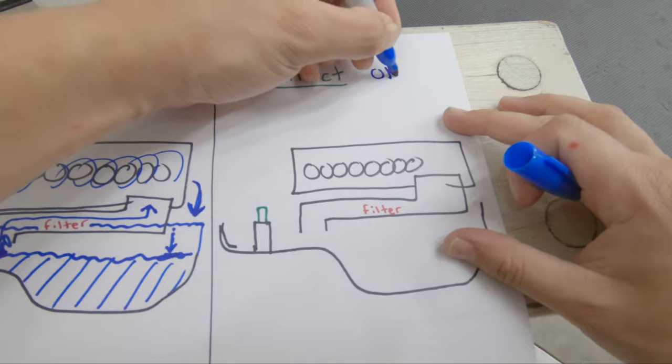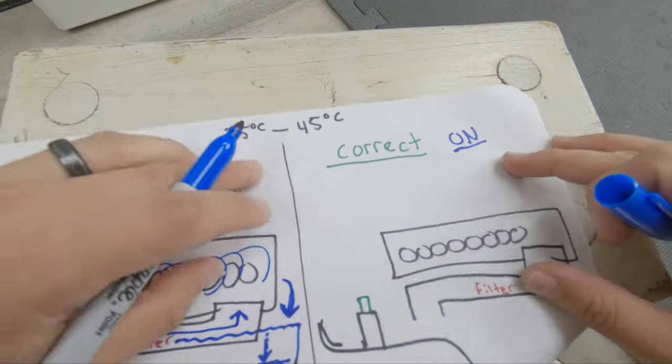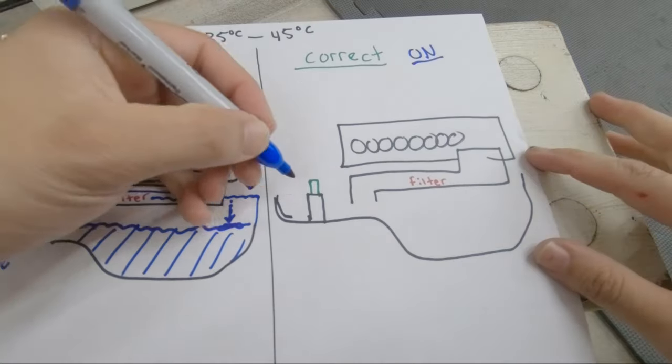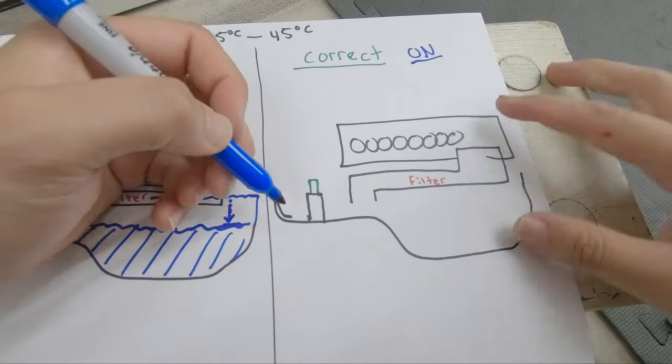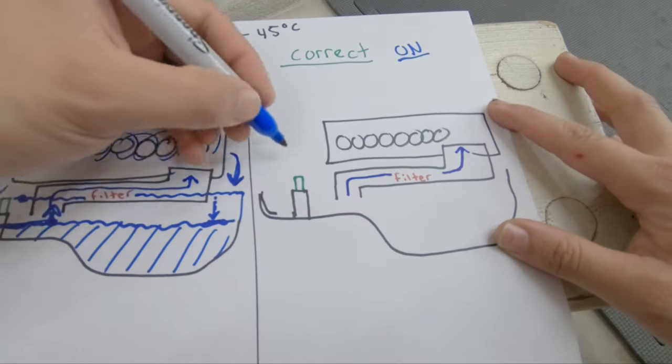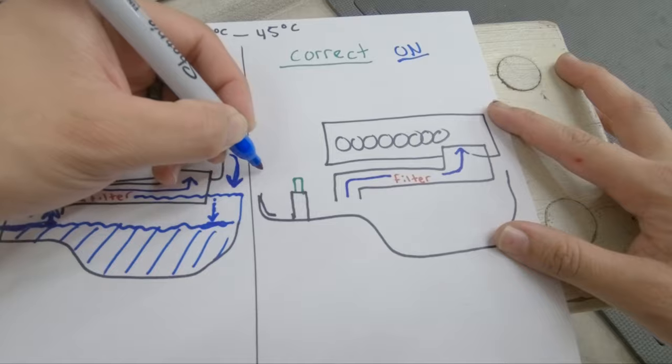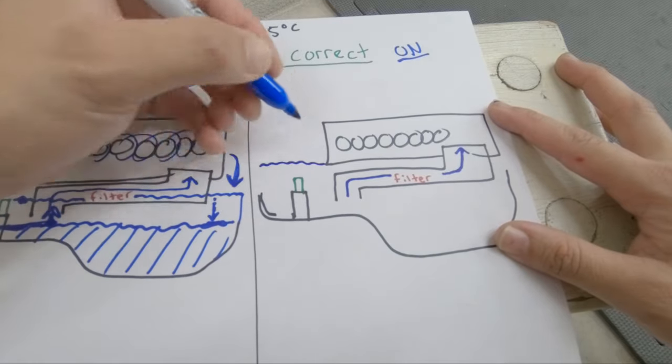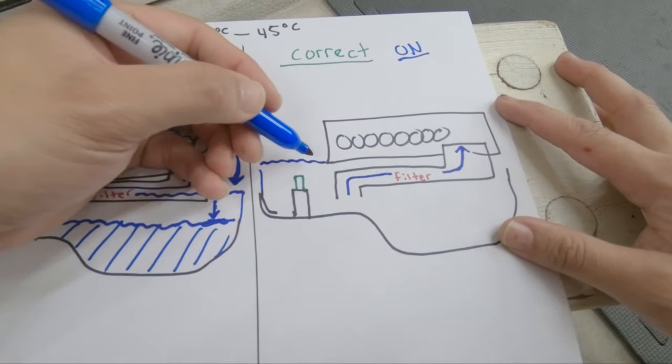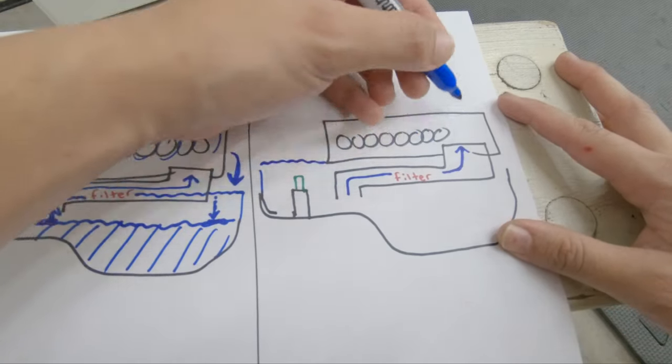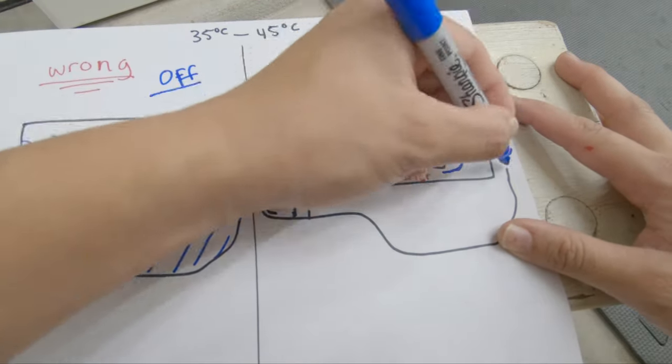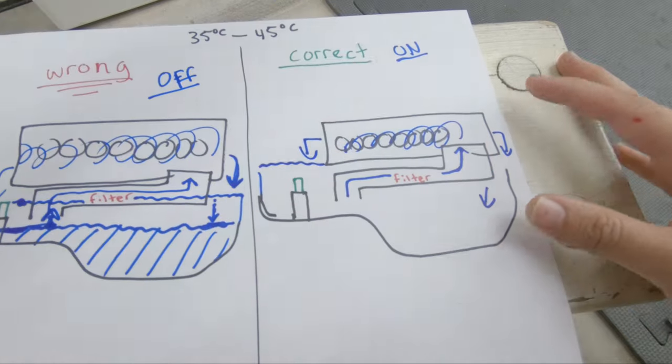So the correct way, again within this temperature range, is to have the car running so the oil is going through the whole system. Once we put in those nine quarts or liters of oil, obviously it's going to overflow. What you want to do is have the oil go through the whole system, through all the gears, and then eventually back out into the oil pan.